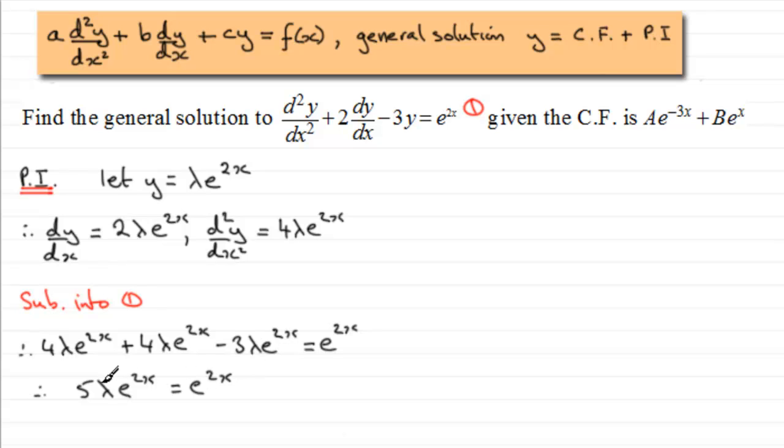You can see that 5 lambda must be equal to 1 if we just compare the coefficients of e to the power 2x. Therefore, lambda must be equal to 1 fifth.